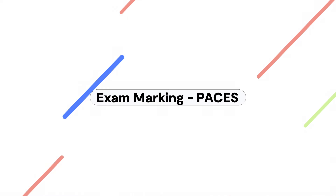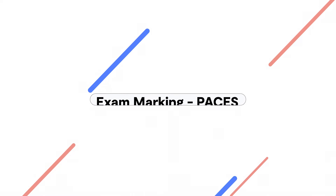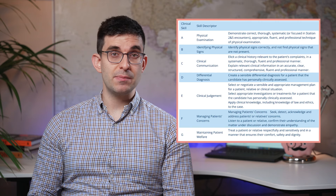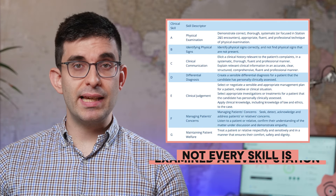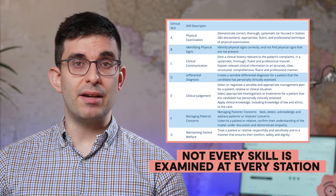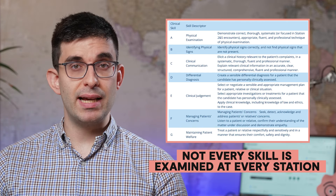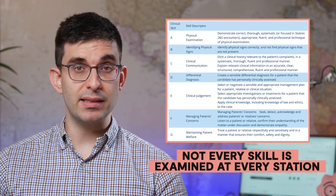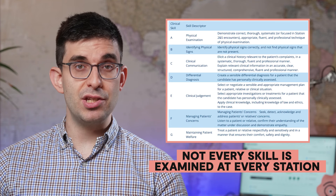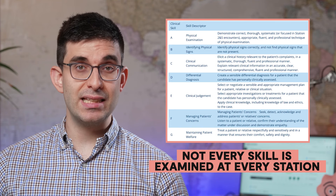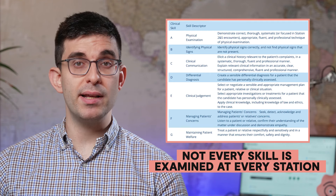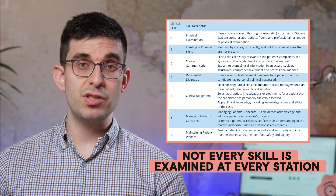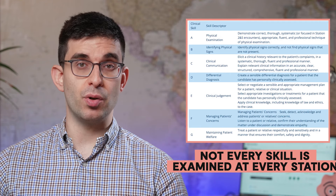At each patient encounter, one of seven key clinical skills, A to G, are assessed by the examiners. Not every skill is examined at every station. The examiner has to decide if they have seen the skill demonstrated or not, by scoring each skill as satisfactory, borderline, or unsatisfactory. This is then used to provide the candidate with their overall score.